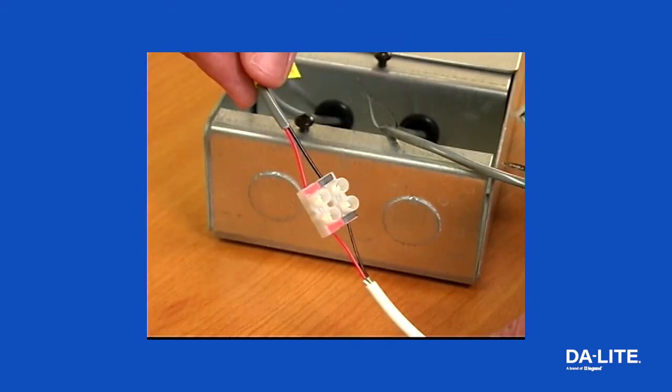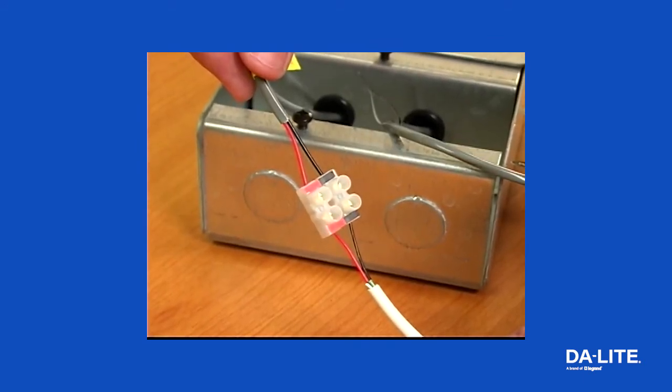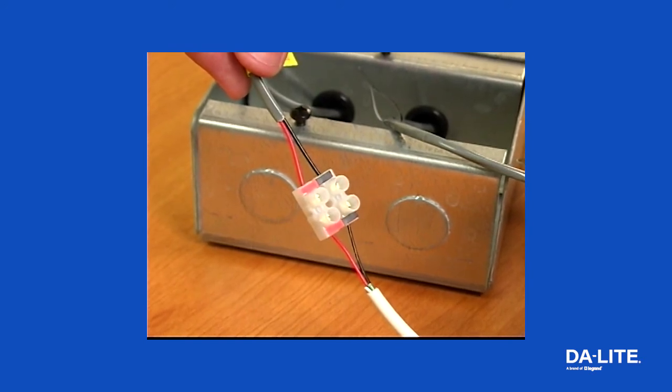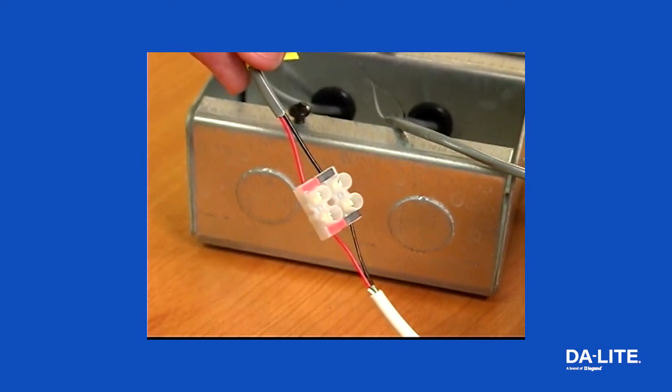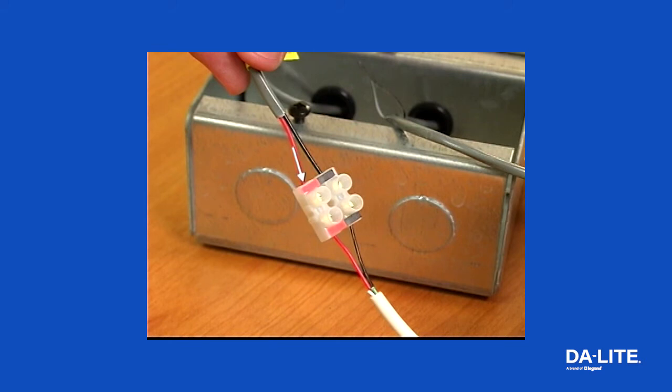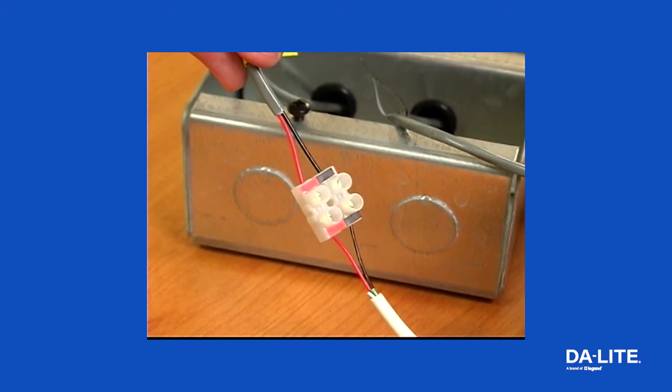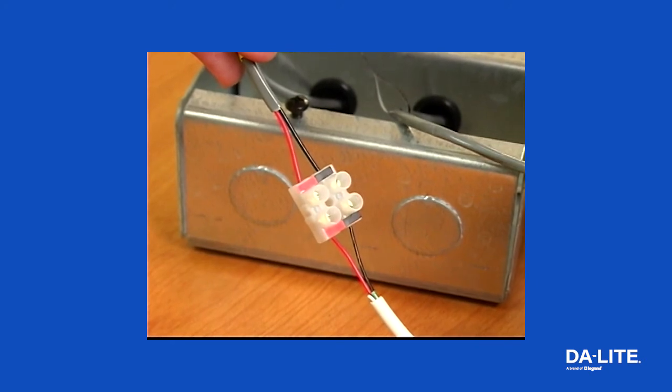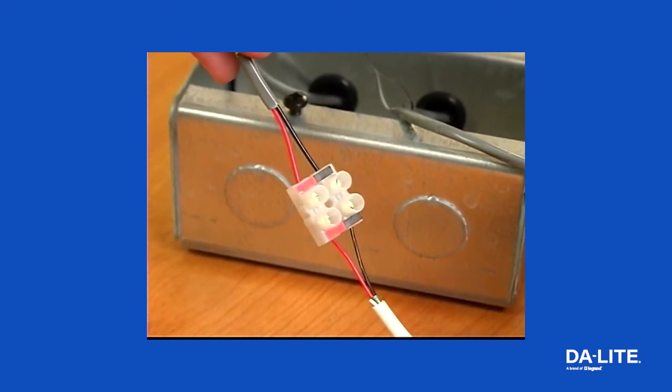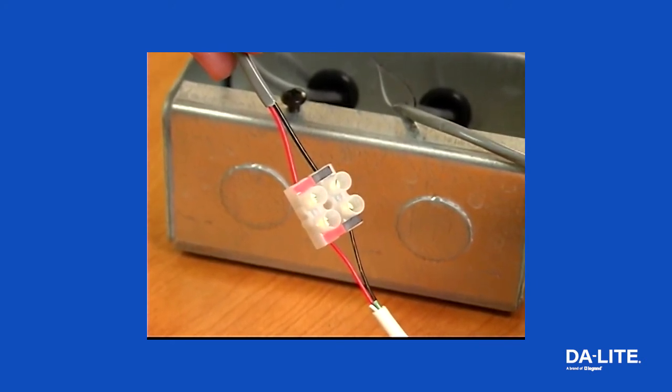When extending the low voltage connection from the projector's screen trigger output, be sure to maintain the proper polarity. The red wire from the VPI is the signal and the black wire from the VPI is the ground. Connect the wires from the VPI that are labeled low voltage connection to the end of the extended screen trigger wires.